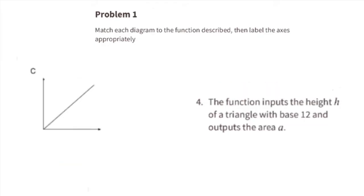Diagram C matches function 4. The function inputs the height of a triangle with a base of 12 and outputs the area, A. The horizontal axis, or x-axis, is the height, H, and the vertical axis, or y-axis, is the area, A. This graph shows that as the height of the triangle increases, the area of the triangle also increases at a constant rate.